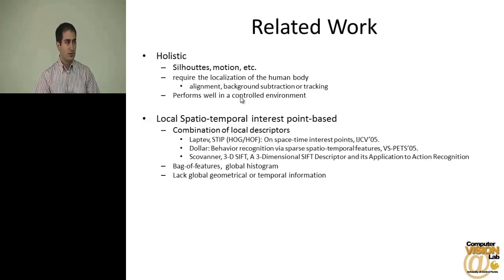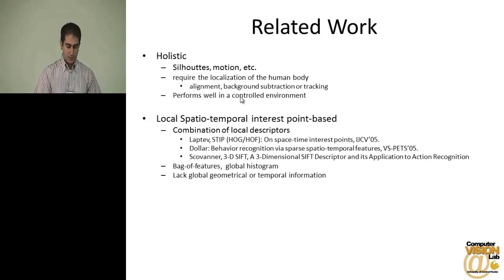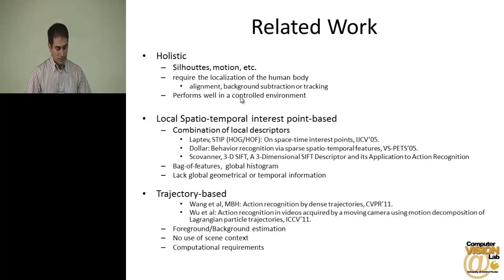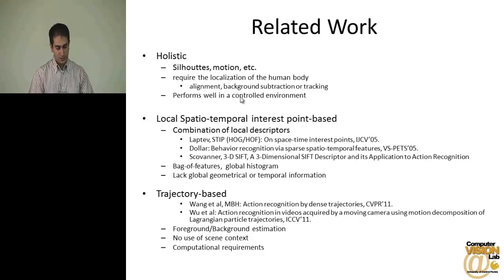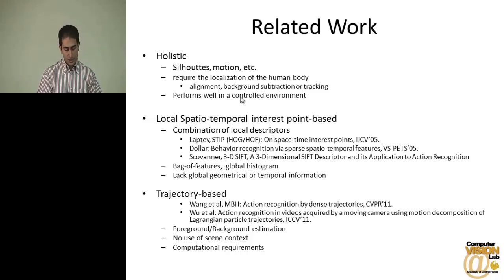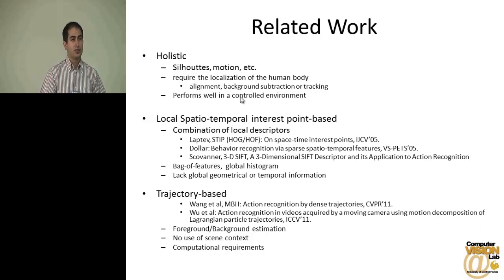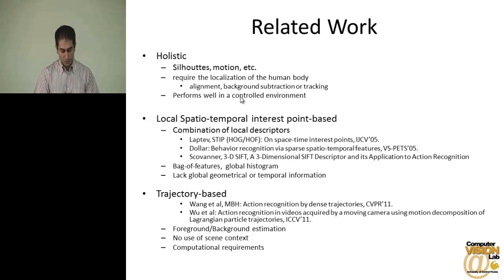These methods usually utilize the Bag-of-Words features framework. Even though these descriptors are computed locally, they are combined in a global histogram, which causes them to lack global geometrical or temporal information. Recently, trajectory-based methods have also been proposed, such as MBH, which computes foreground trajectories and does descriptor computation along the paths. There is also work by Wu, which computes particle trajectories and extracts chaotic invariant features. These methods require segmentation of foreground and background and don't capture scene information, which may be useful for finding the type of action, and they are computationally complex.